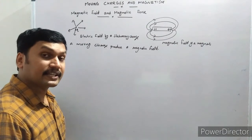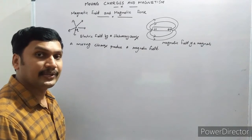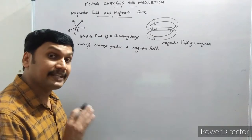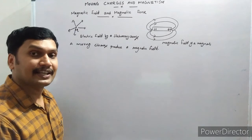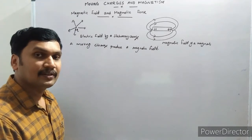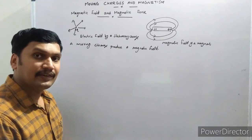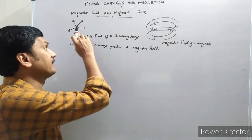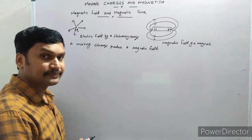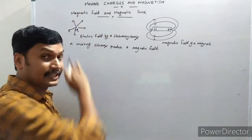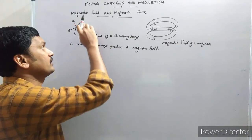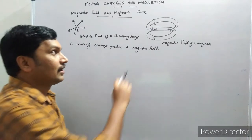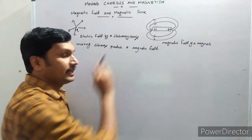A stationary charge, or a charge at rest, produces an electric field. The electric field of a charge is the region or space around it where any other charge experiences an electrostatic force. In the electric field of a charge we can draw the electric lines of force to show the direction of the electric field. Similarly, you already know how to draw the magnetic field lines due to a bar magnet.